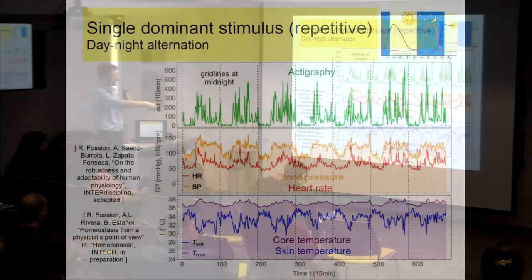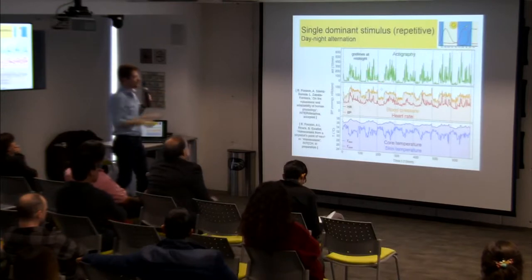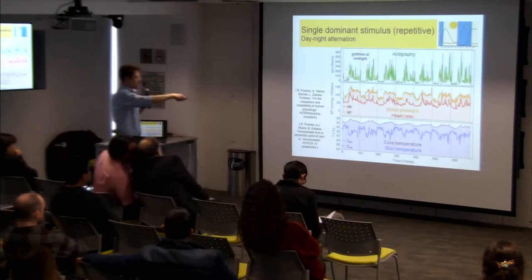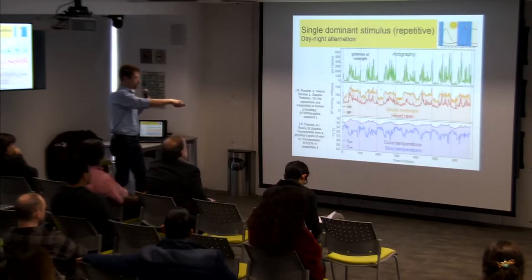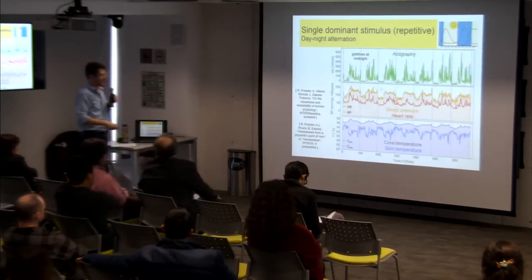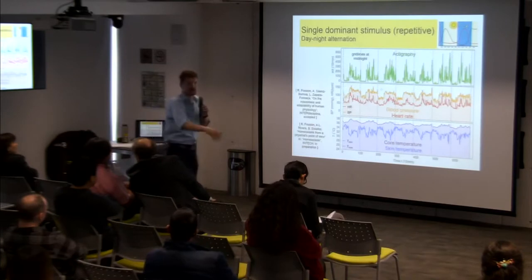We have here different physiological variables. Actigraphy is the number of movements you make per minute. The grid lines are at 24 hours, at midnight. Obviously most of us are more active during the day and less active during the night, then active again the next day. Simultaneously, I show four other variables: red is heart rate, orange is blood pressure, purple is internal core temperature, and blue is skin temperature. The most dominant feature of all these time series is this periodic day-night cycle — the circadian rhythm.